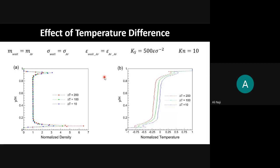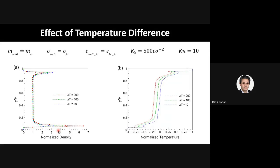Reza, sorry for the interruption. You are at nine minutes — basically one minute to your official time and then five more minutes for questions, but it's flexible. Go on. We can see the result of this phenomenon when the temperature difference is applied on the walls. When it is 200 K difference, we can see that the bottom wall was the cold wall and the upper wall was the hot wall. When the gas collides with the cold wall, it loses more energy and accumulates more near the cold wall. In contrast, when gas atoms collide with the upper wall, they gain more energy.